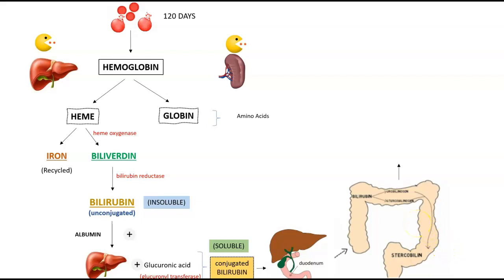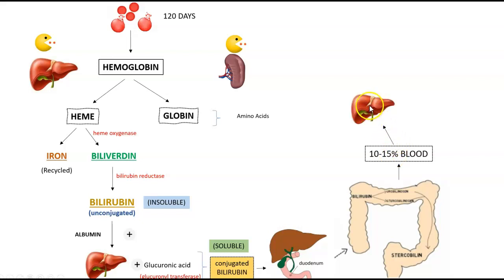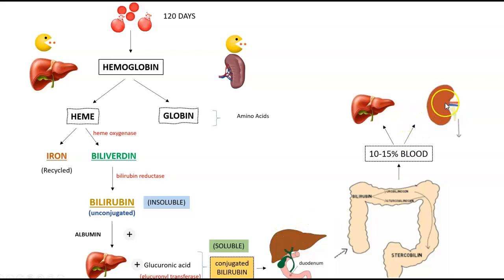Now not all of the bilirubin is excreted in the colon into the feces. About 10 to 15 percent is reabsorbed into the bloodstream. Some of this is reabsorbed into the liver where it enters the enterohepatic circulation and the body recycles and uses it there. The other portion enters the kidney and is eliminated via the urine as urobilin.